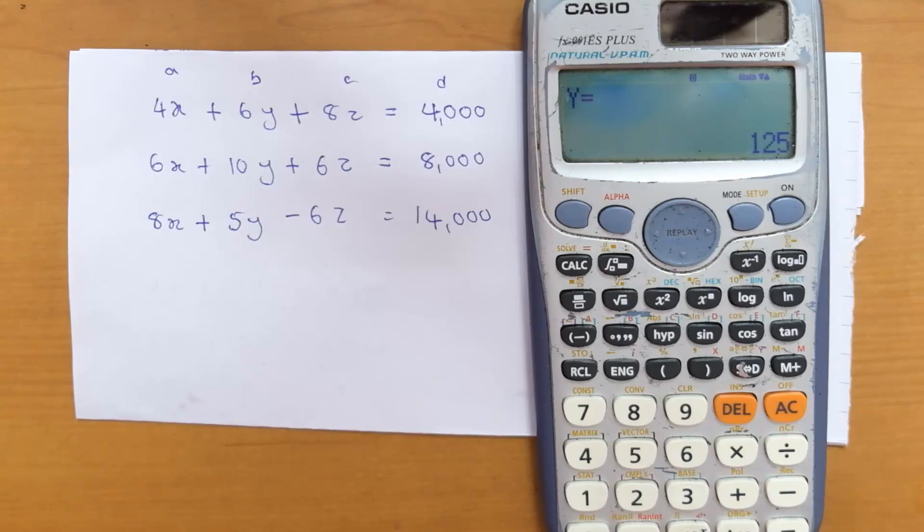For z you are getting a value of negative 312.5. So this is how you can do a three-variable linear equation calculation using the Casio fx-991ES Plus calculator.